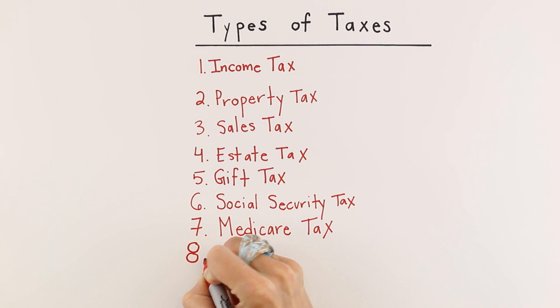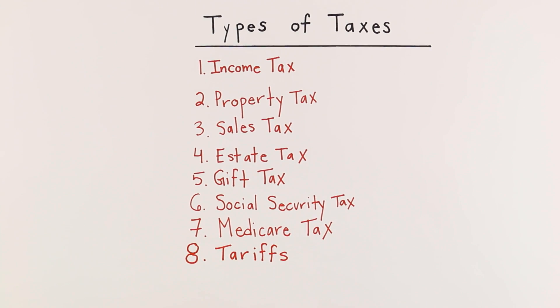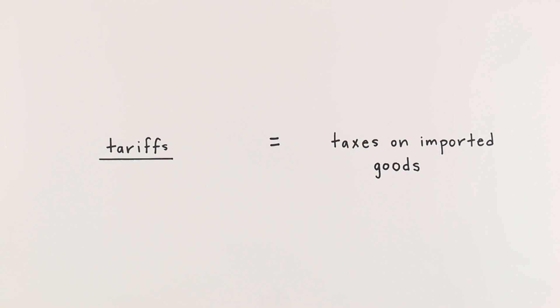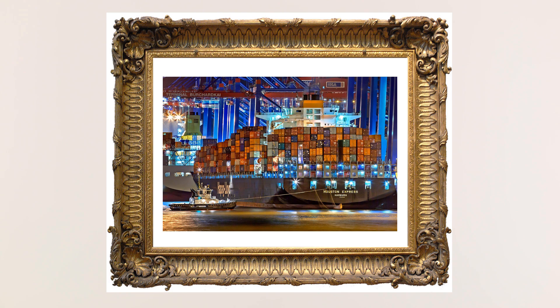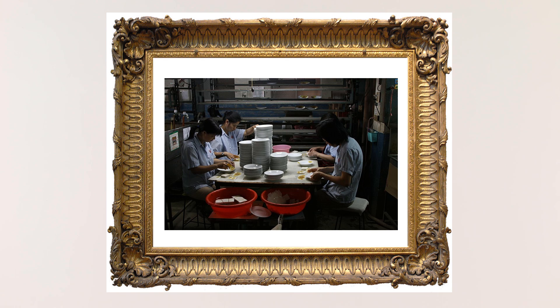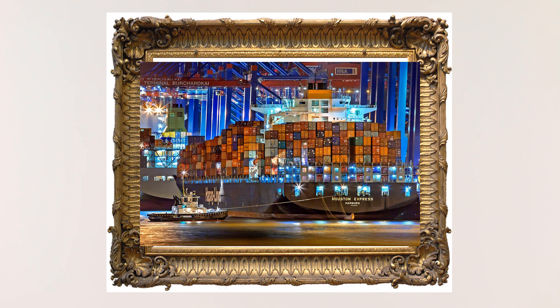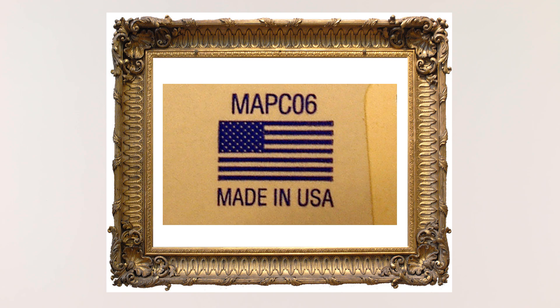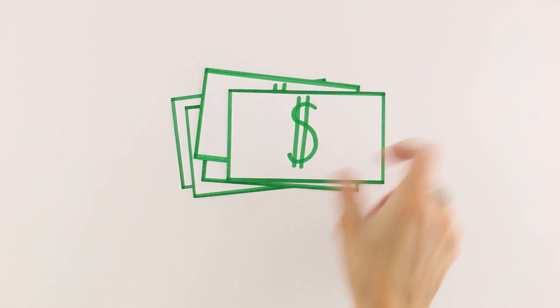The final type of taxes we will study today are tariffs. Tariffs are taxes on imported goods. Import means to bring in goods from another country. Many products sold in the United States are made in other countries for a lower price and then shipped here. To encourage businesses to sell American-made products, sometimes the federal government charges these companies tariffs on the foreign goods they import.